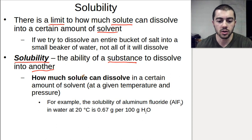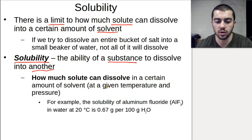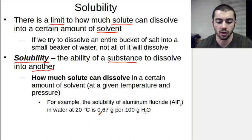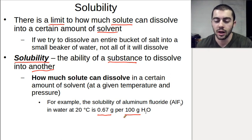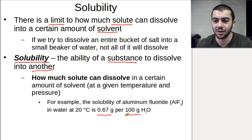How much solute can dissolve depends on conditions like temperature and pressure. Different substances have different solubility values. For example, aluminum fluoride has a solubility of 0.67 grams per 100 grams of H₂O. If we take that same bucket of salt and try to dissolve it into the ocean, there's a lot more water to accommodate all that salt, so it's going to work out a lot better than with a small beaker.